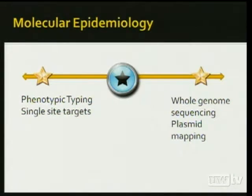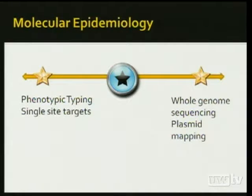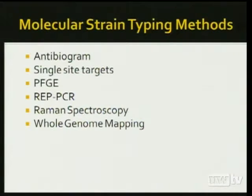Techniques available for molecular epidemiology span a broad spectrum, ranging from phenotypic techniques like biochemical testing and serotyping, to single site targets, all the way — taking an exponential leap — to whole genome sequencing and plasmid mapping. The molecular strain typing methods I'm going to talk about today are listed here. An antibiogram is not technically a molecular technique, but I'm going to make a little argument for it.